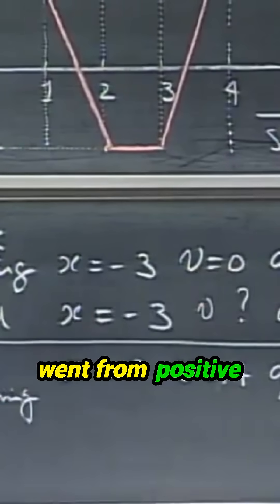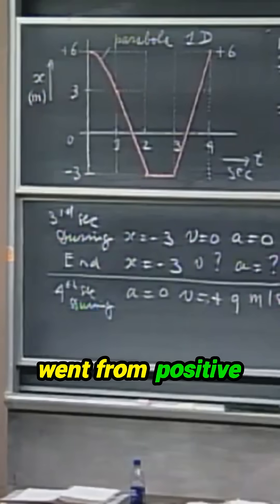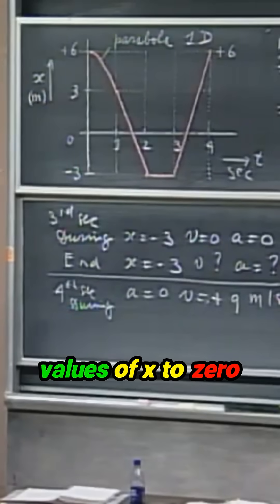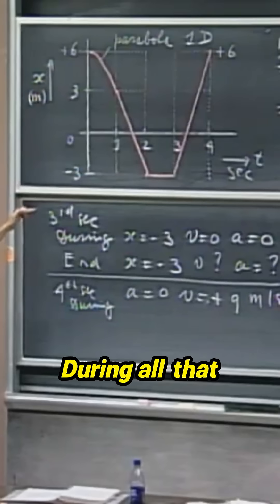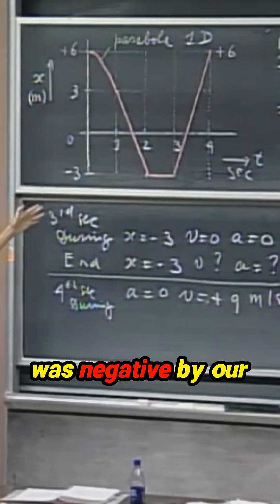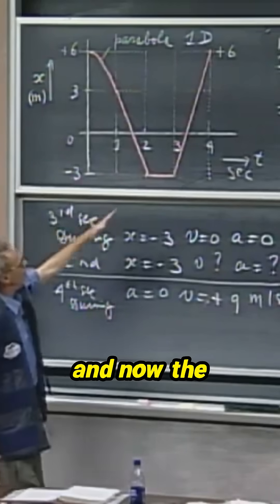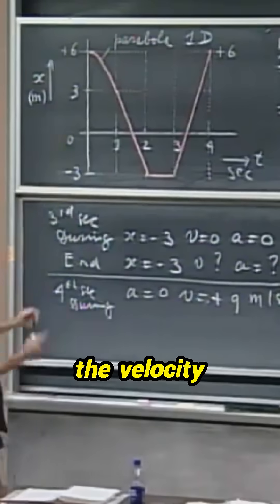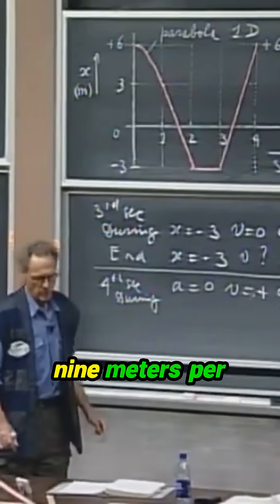So the object first went from positive values of x to zero and to negative values for x. During all that time, the velocity was negative by our sign convention, and now the velocity goes back to plus six. The velocity becomes plus nine meters per second.